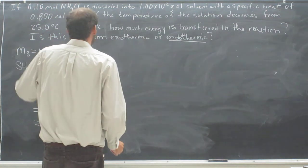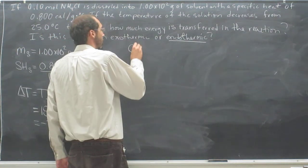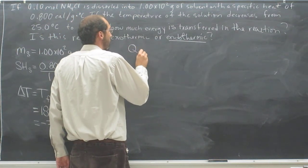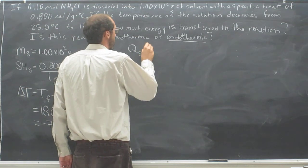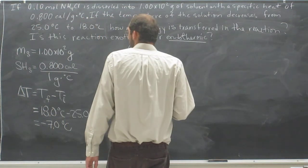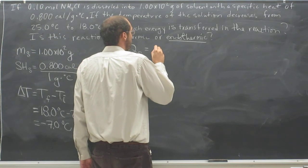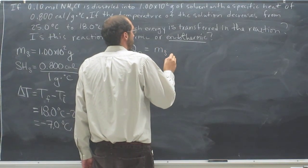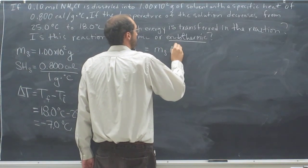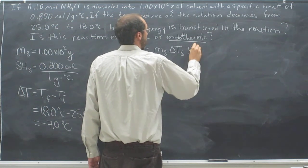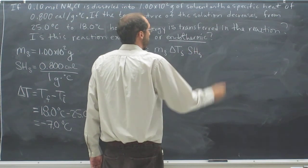All you've got to do now is plug these values into the equation. The heat transferred by the solvent is going to be the mass of the solvent times the change in temperature of the solvent times the specific heat of the solvent.